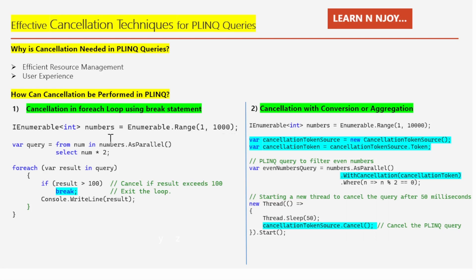Here I have written: `IEnumerable<int> numbers = Enumerable.Range(1, 1000)`. This line creates an enumerable sequence of integers from one to one thousand using the `Enumerable.Range` method and assigns it to the variable named `numbers`. Then I have written a parallel query: `var query = from num in numbers.AsParallel() select num * 2`. This query doubles each number in the sequence.